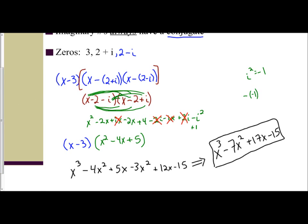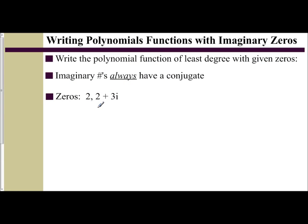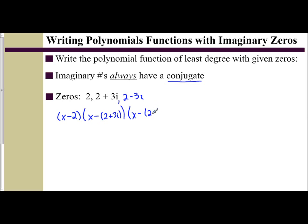One last example. We have a real zero of 2 and a complex zero of 2 plus 3i. Using the conjugate, the third zero is 2 minus 3i. The factors are x minus 2, x minus the quantity 2 plus 3i, and x minus the quantity 2 minus 3i. We'll focus on simplifying the complex factors first.